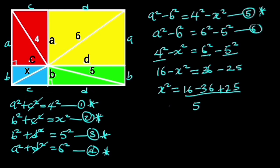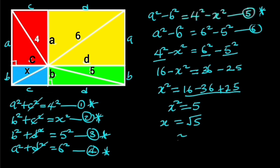So that X squared will be equal to 5. Taking the square root of both sides will give us X is equal to the square root of 5. And the square root of 5 is approximately 2.24. Hence, X is approximately 2.24.